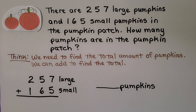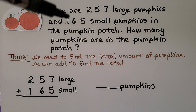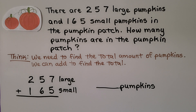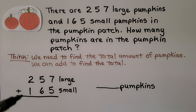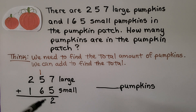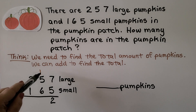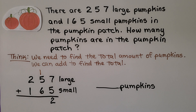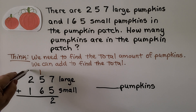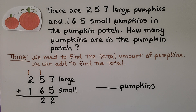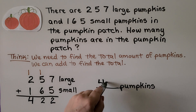Word problem: There are 257 large pumpkins and 165 small pumpkins in the pumpkin patch. How many pumpkins are in the pumpkin patch? We need to find the total amount of pumpkins, so we add 257 plus 165. We start with the ones place: seven ones plus five ones is twelve ones — one ten, two ones — we regroup the ten. Now we add the tens: six plus five plus one. Adding five and one gives six plus six, a doubles — that's twelve tens. Twelve tens is one hundred with two tens. We add the hundreds: two, three, four. That's 422. There are 422 pumpkins in all.